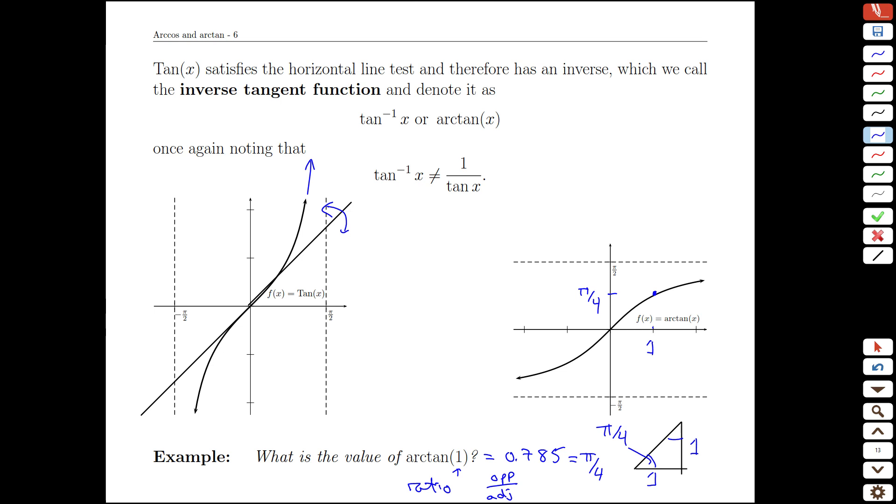It's worth making a quick note about the arctan function in particular and some of its unique properties. We don't actually have that many functions in our toolkit that, when we approach x equals positive infinity or x goes towards positive infinity, we have a horizontal asymptote at one value, but when we go in the other direction, we approach a different horizontal asymptote.